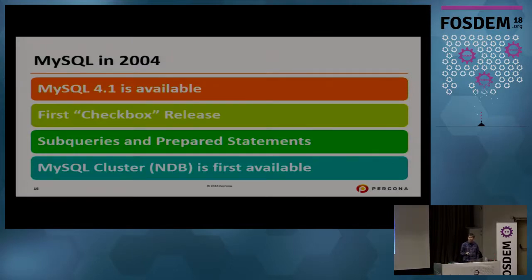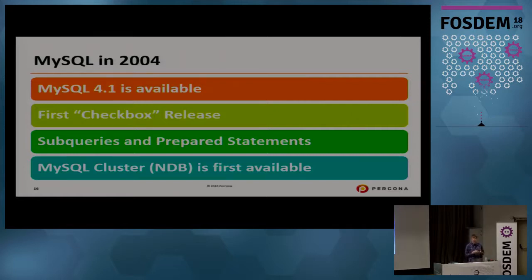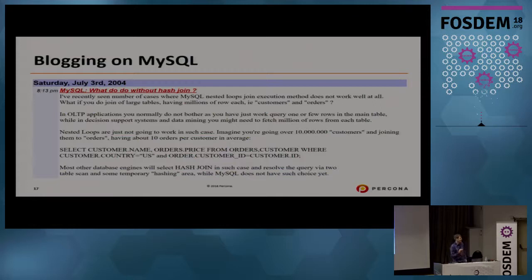In 2004, MySQL 4.1 was available, and I would call that the first checkbox release, because a lot of MySQL's direction was driven by sales and marketing — getting new features to serve customers asking for them. We got subqueries introduced into MySQL, but they were never quite optimized until many years later. We also got prepared statements, which I think in MySQL are still far less mature than in Postgres or commercial databases. And that was also the year MySQL Cluster (NDB) became first available.